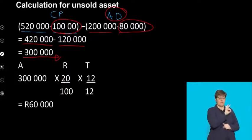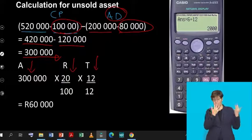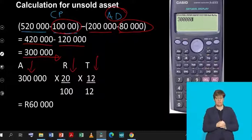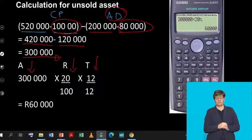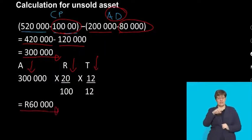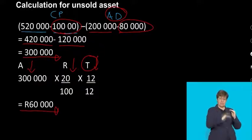Take ART into consideration. Amount: R300,000. Rate: 20 over 100. Time: 12 over 12 — we had the asset for the entire year. R300,000 times 20% equals R60,000. Get into the habit of using the time component in your calculation, even if it's 12 over 12. That R60,000 is your depreciation on your unsold asset.